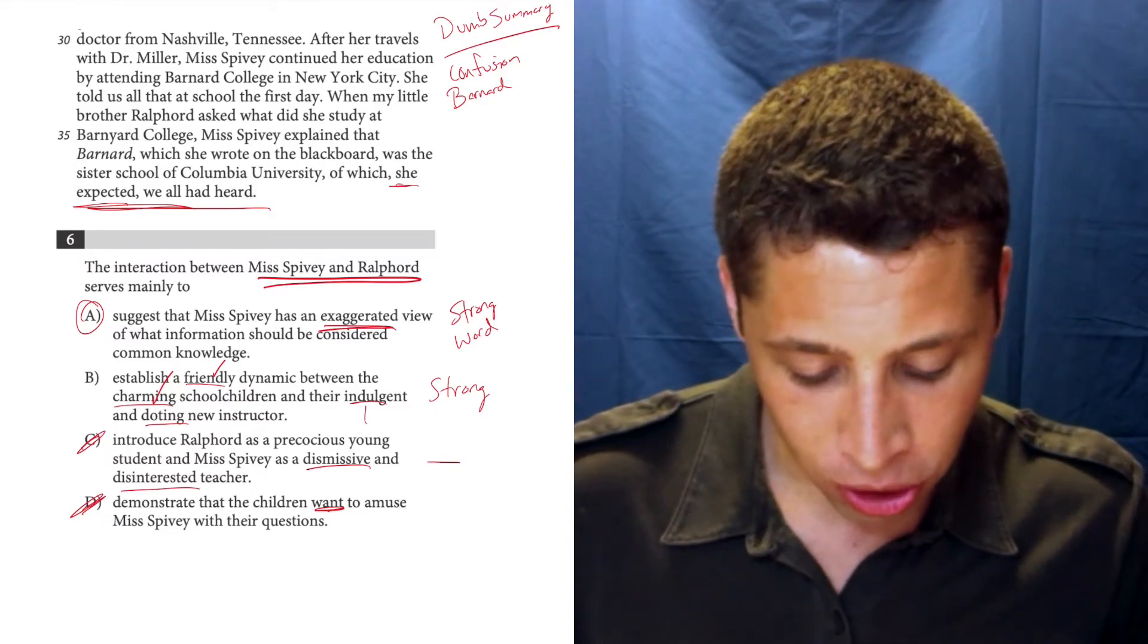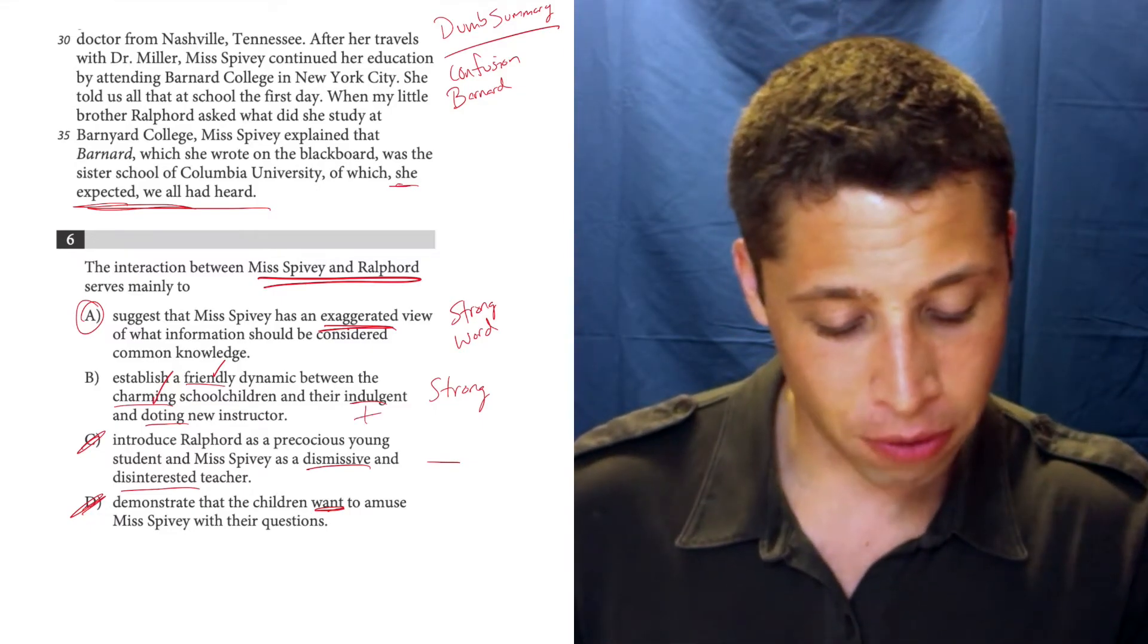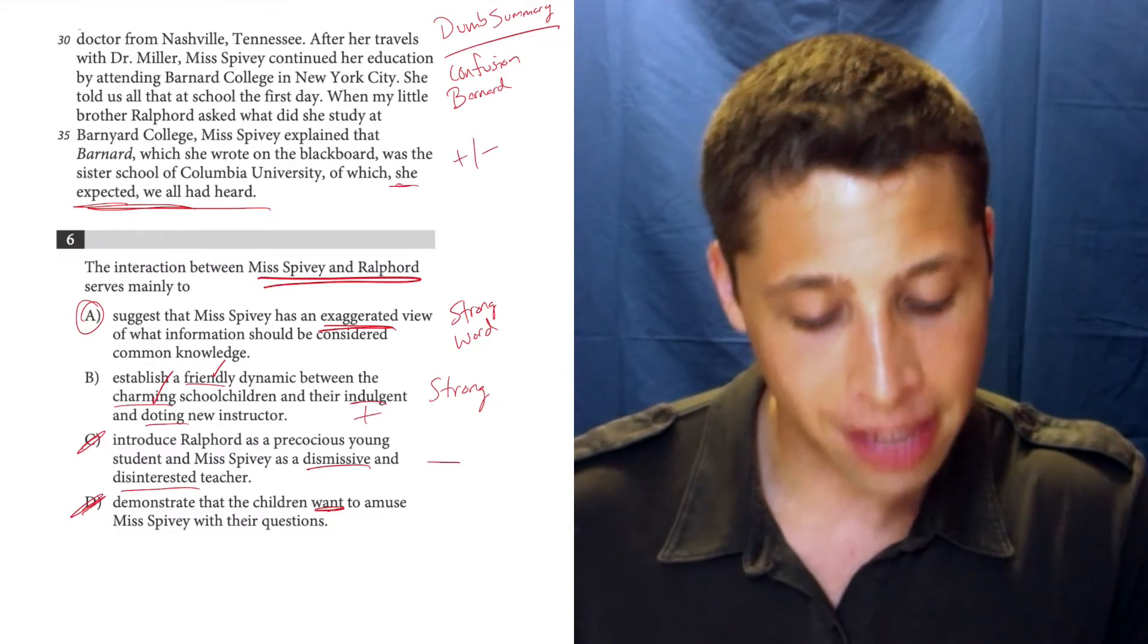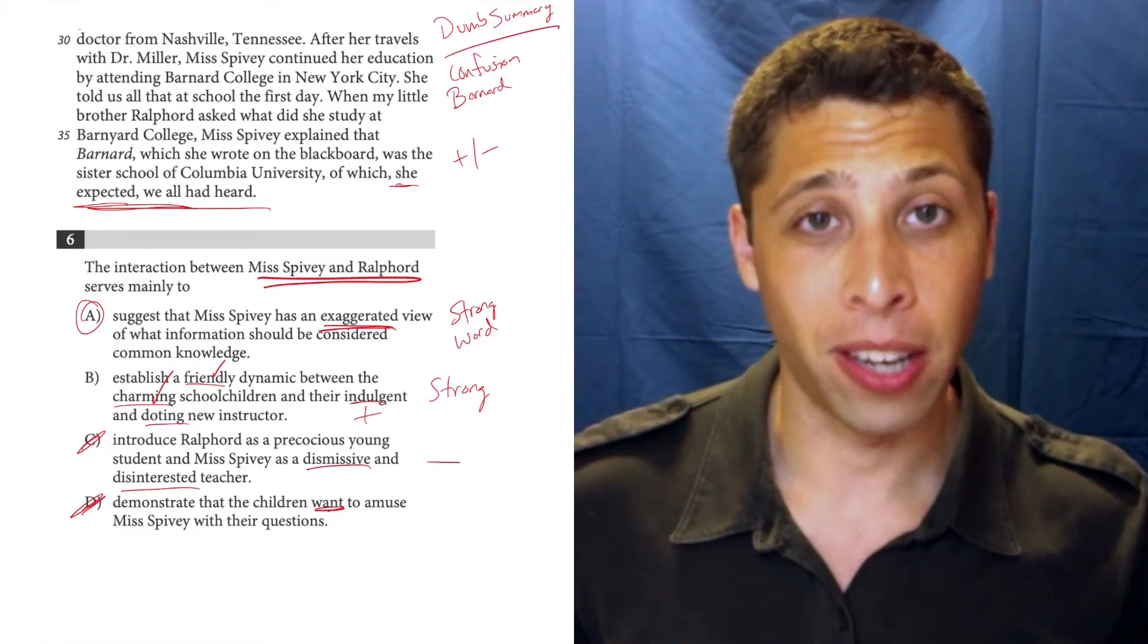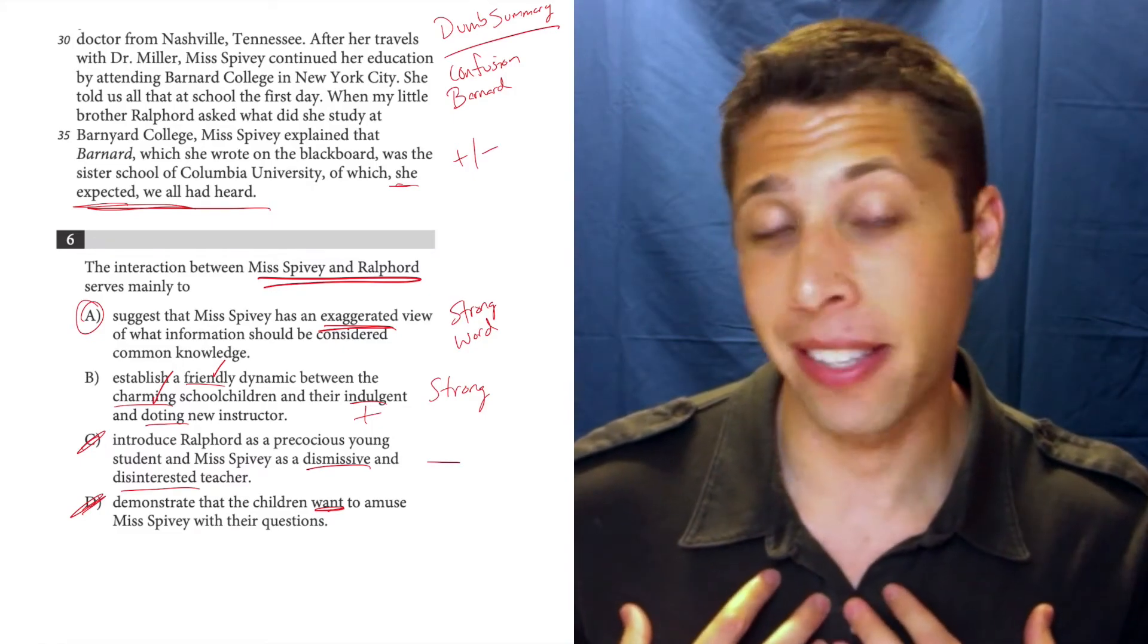Whereas B, indulgent and doting are a little too positive for this kind of like mixed positive negative vibe that I'm getting from here. But this is a very difficult question. I think I got this wrong the first time I did it.